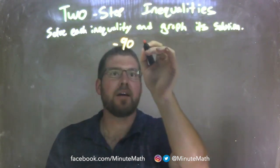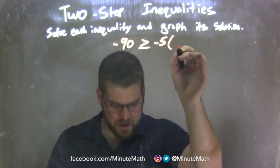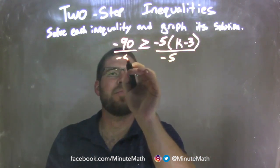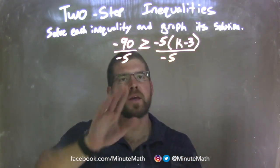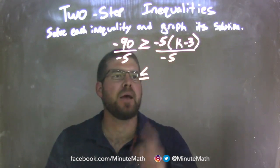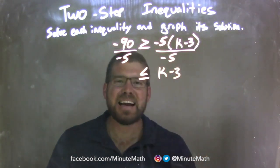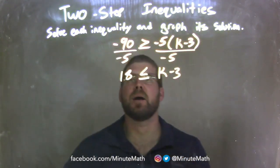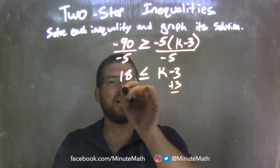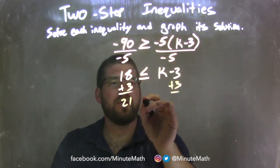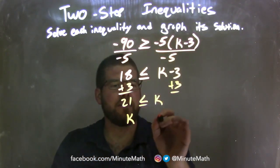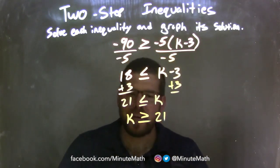Negative 90 is greater than or equal to negative 5 times (k minus 3). First step: divide both sides by negative 5. Since I'm dividing over the inequality by a negative, that greater than or equal to sign turns into a less than or equal to sign. I'm left with k minus 3 on the right, and 5 goes into 90, 18 times — a negative divided by a negative is a positive, so we keep it positive 18. From there, add 3 to both sides: 18 plus 3 is 21, and 21 is less than or equal to k. Rewriting with k first: k is greater than or equal to 21.